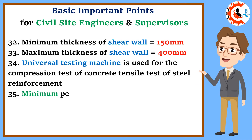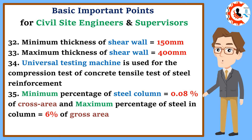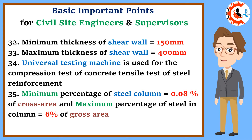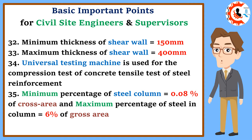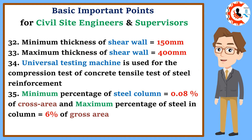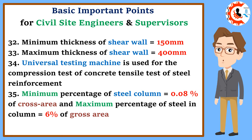32. Minimum thickness of shear wall equals 150 millimeters. 33. Maximum thickness of shear wall equals 400 millimeters. 34. Universal Testing Machine is used for the compression test of concrete and tensile test of steel reinforcement. 35. Minimum percentage of steel in column equals 0.08 percent of gross cross-sectional area; maximum percentage equals 6 percent of gross area.